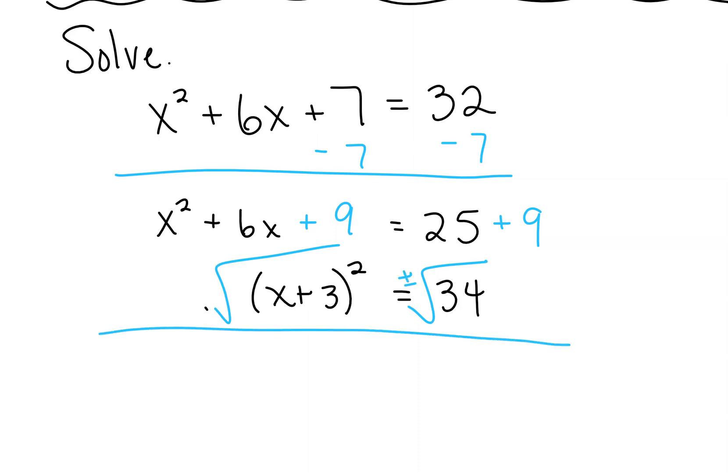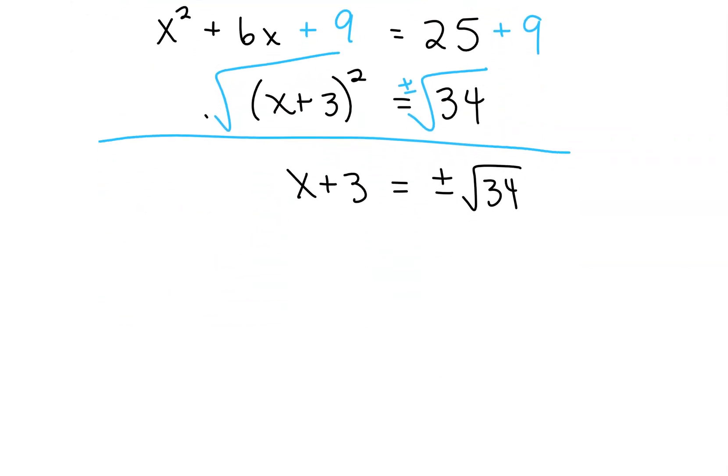Remember here, plus or minus. The square root of x plus 3 squared is just x plus 3. 34 divided by 2 is 17, so the only factors of 34 are 2 and 17. It doesn't simplify. So we'll just leave it plus or minus the square root of 34. And then what would our last step be? We subtract the 3. Can we subtract the 3 from that square root? No. So, negative 3 plus or minus the square root of 34.